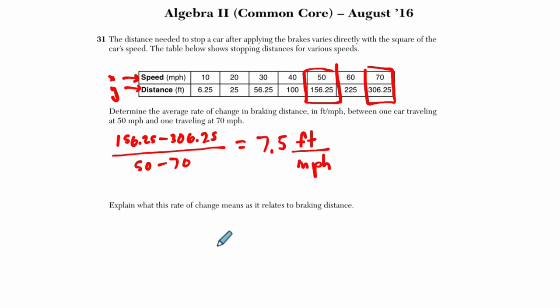Explain what this rate of change means as it relates to braking distance. Well, this is saying it takes 7.5 more feet for every whatever the unit is down here, which is one. It's implied that it's one mile per hour, right? It's over one. If it was over some other number, that would change the answer, right? So this tells me that for every mile per hour you increase your speed,